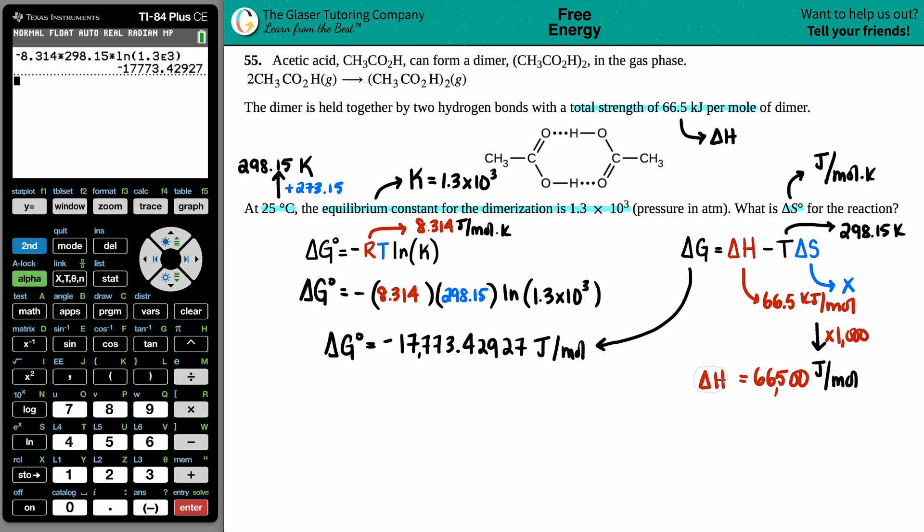And now I can use that formula to solve for ΔS. So let's see, I got -17,773.42927 - I don't want to round because that wasn't the final answer - equals 66,500 minus the temperature, so that's the 298.15, and then times by x. So maybe I'll just put an x value here.